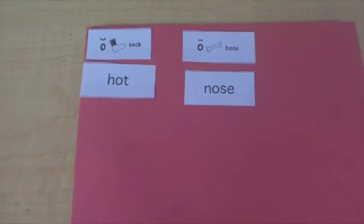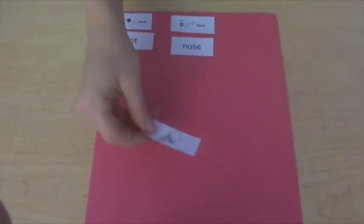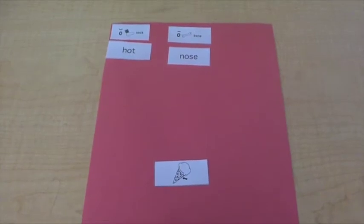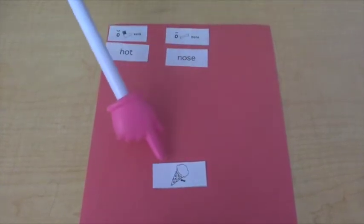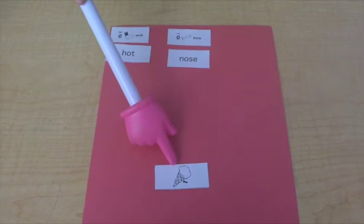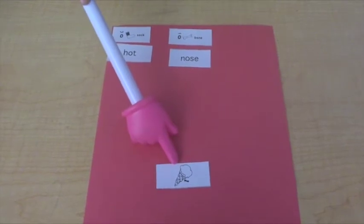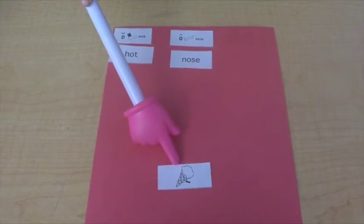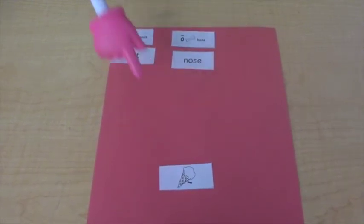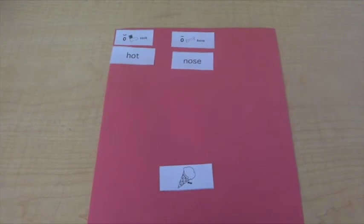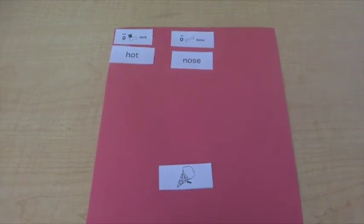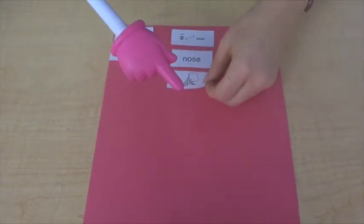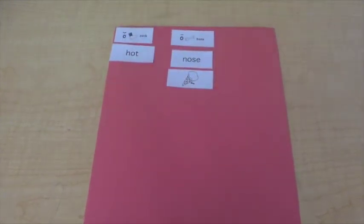Let's do some more words. This is a picture of an ice cream cone. Cone is the word that this picture is showing. Say cone. Now tell me the sounds of cone. C-O-N. In cone, what do you hear? Ah or oh? Yeah, we hear that oh sound. C-O-N. So it goes under the oh column.